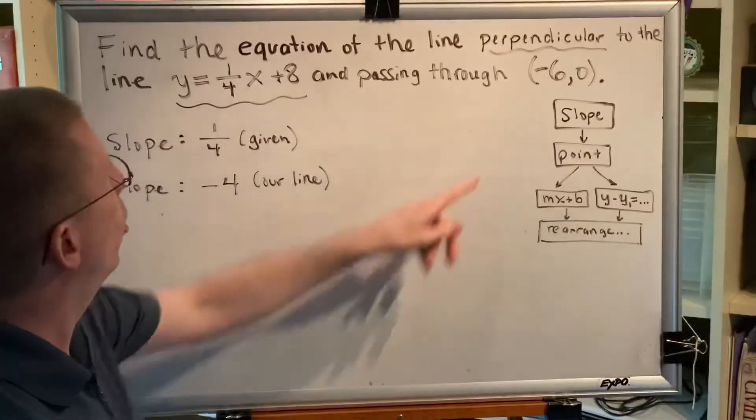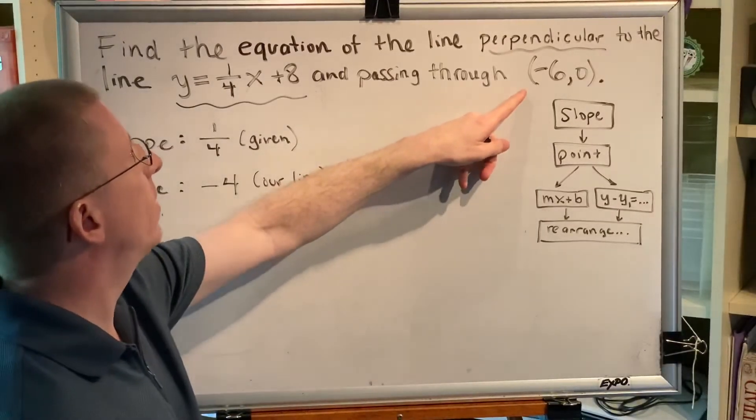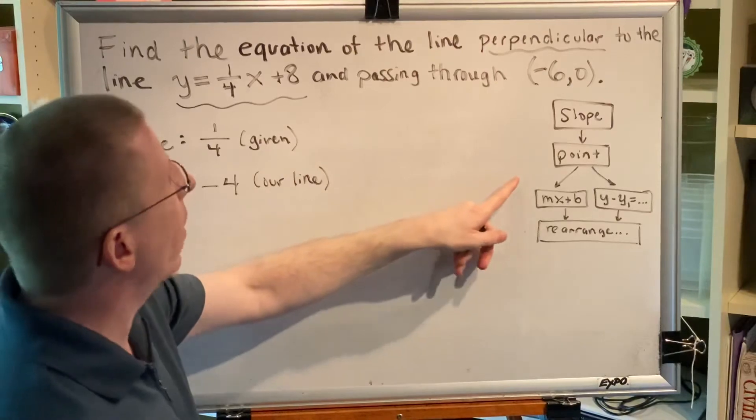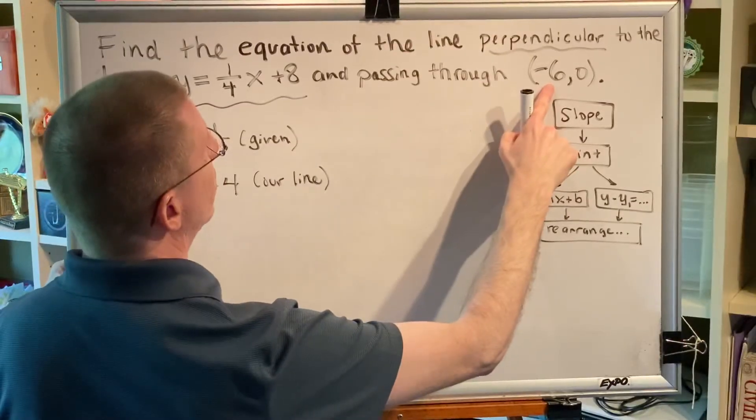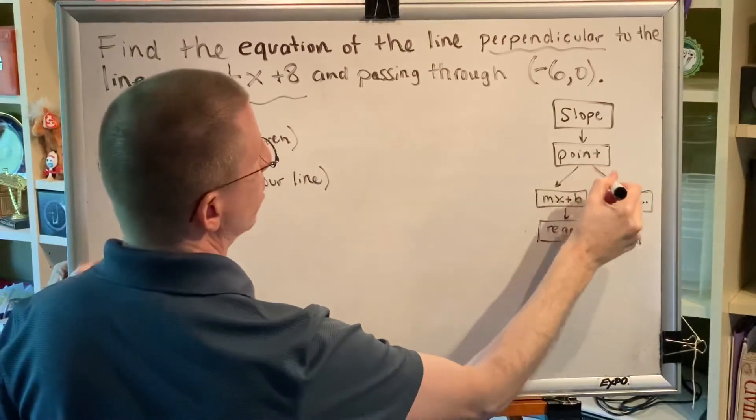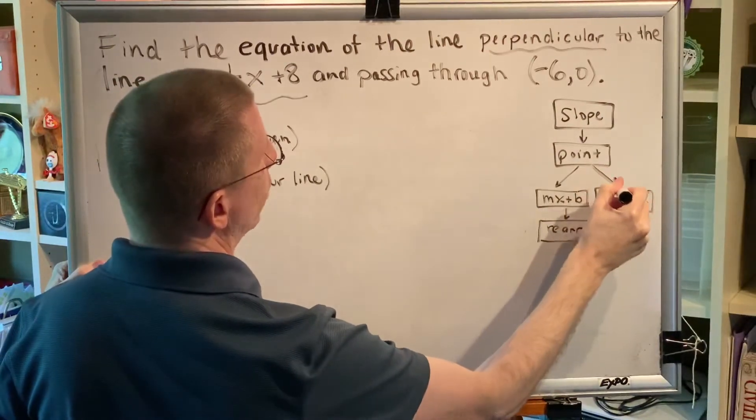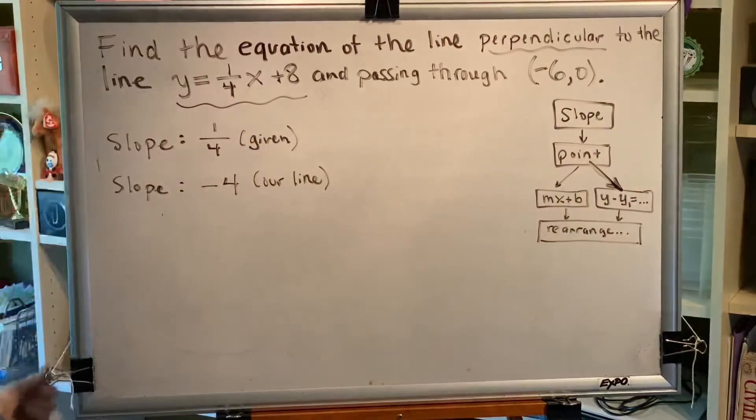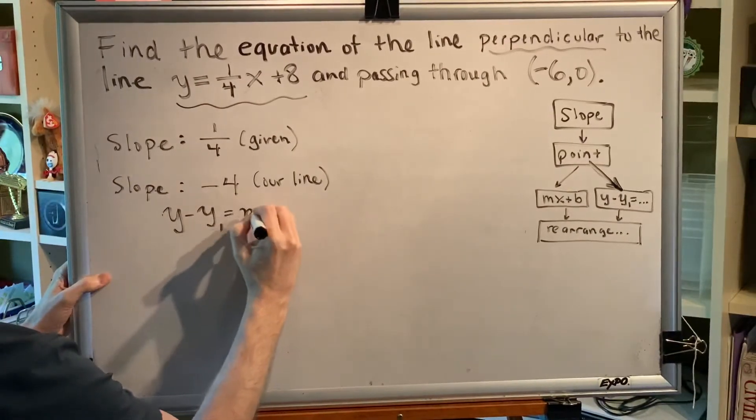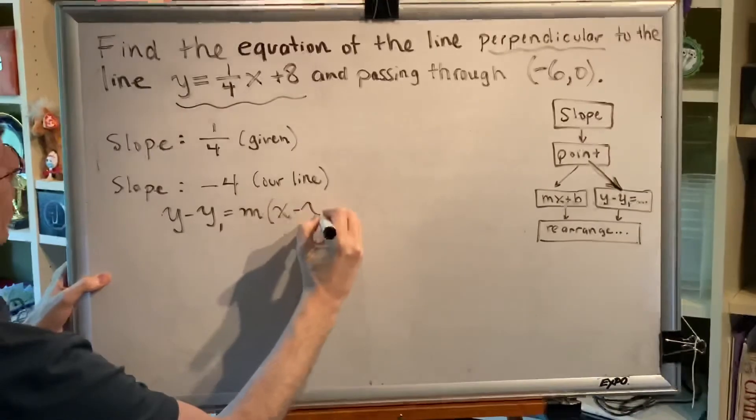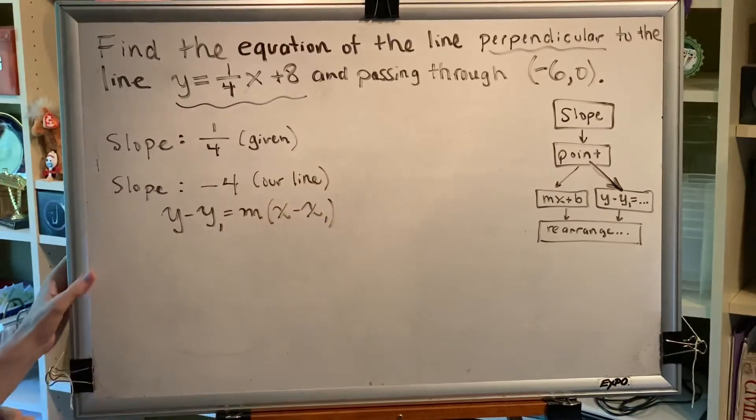Next, pick a point. Only one point was given in this problem and it's negative 6, 0. Pick a path to the left or to the right. We look at the x coordinate, and we find that it is not zero. That forces us to take the path to the right. So we're going to use the point slope equation, y minus y1 equals m times the difference x minus x1 to write the equation of our line.